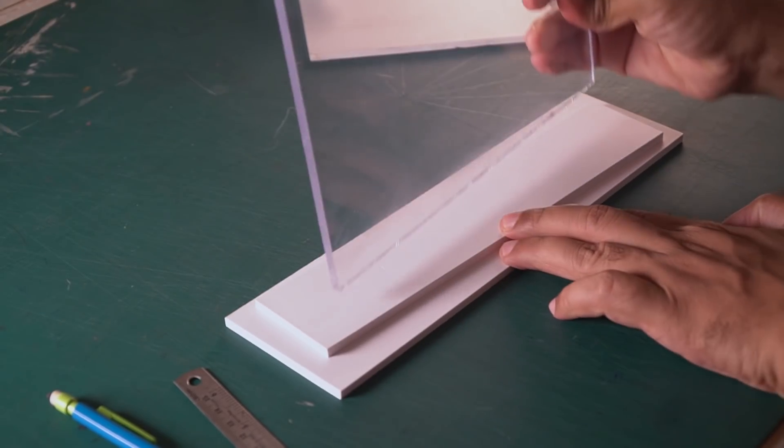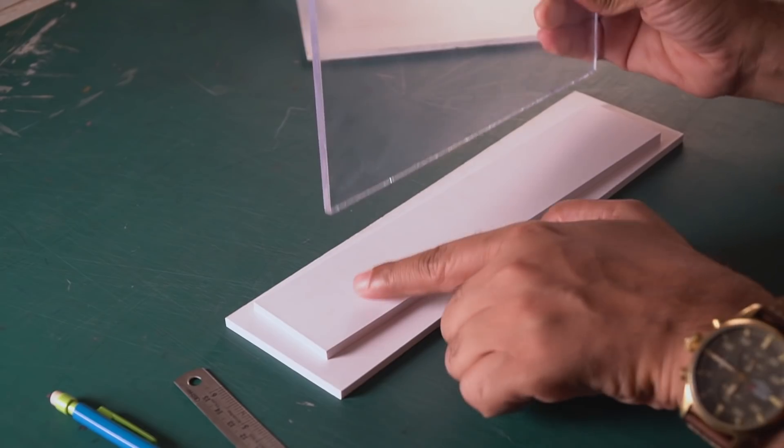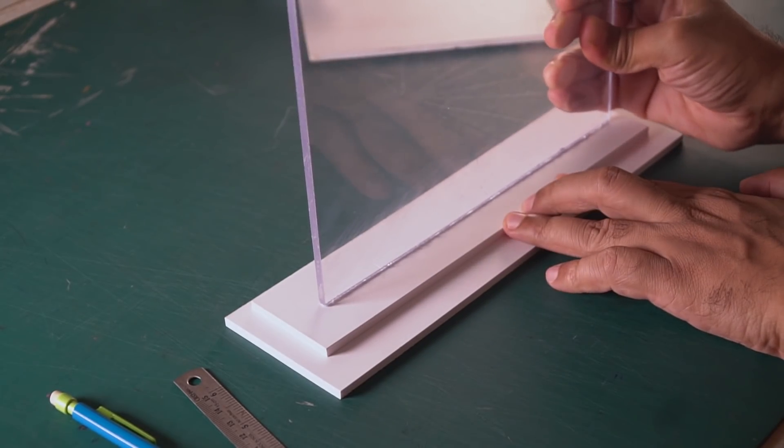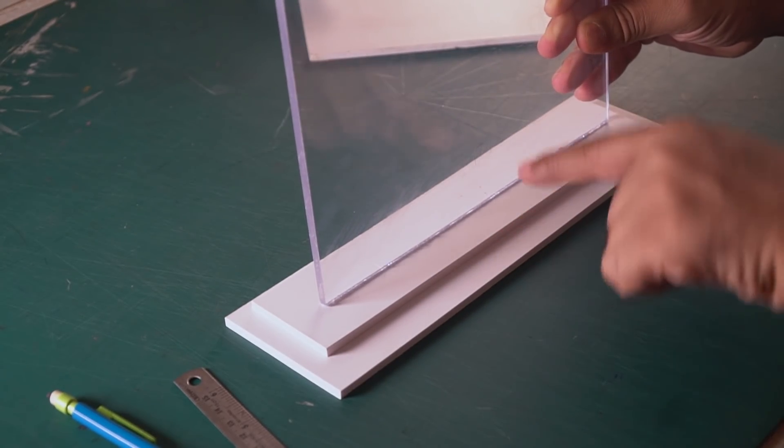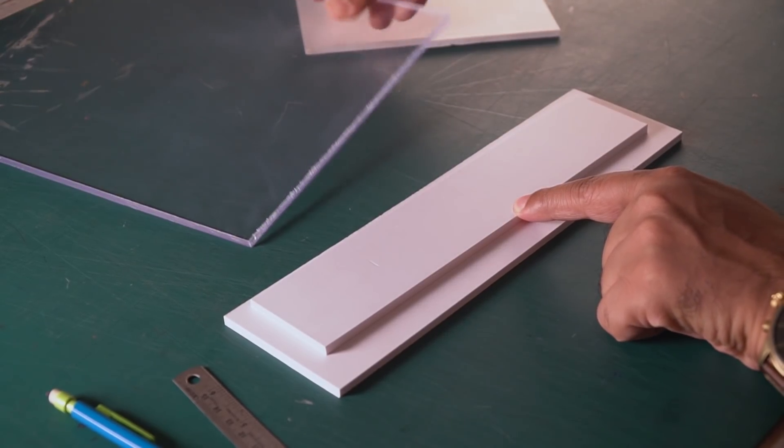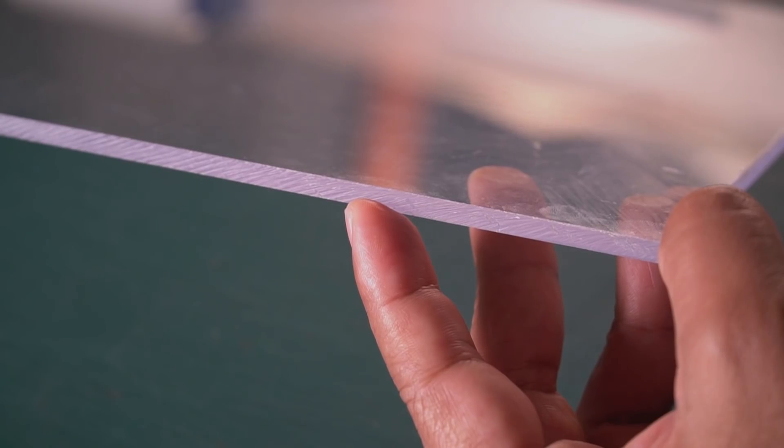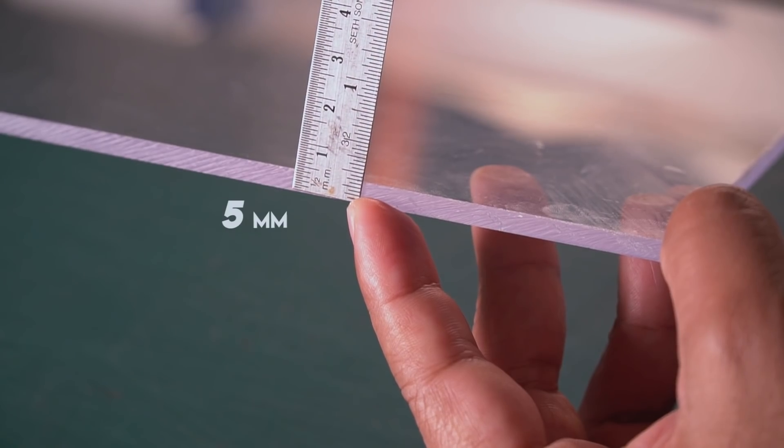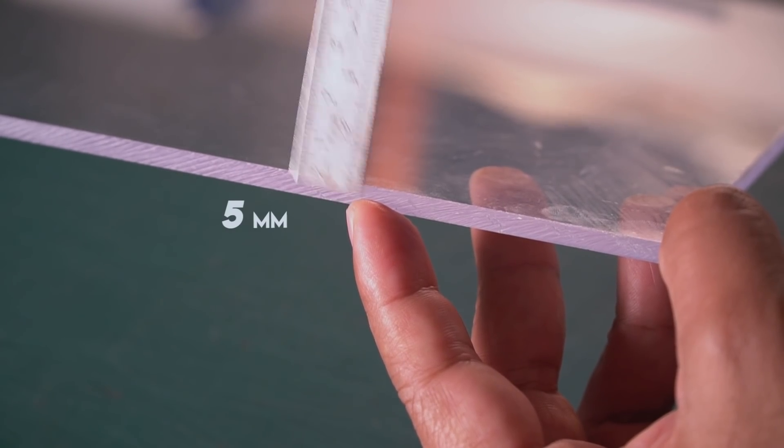Now, how will this sheet stand? For this reason, I will make it a slit. We will insert this acrylic sheet. Let's take a measurement and make a slit. So the thickness of our acrylic sheet is 5mm, so we will cut the slit.